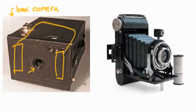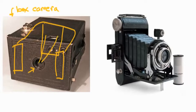Somewhere in the back there's a spot where the film is flattened, the light goes through and shoots onto the film, and you've got a picture. When you're done you advance it. This was a huge period of time when photography was just done on little box cameras like this — they were very popular.